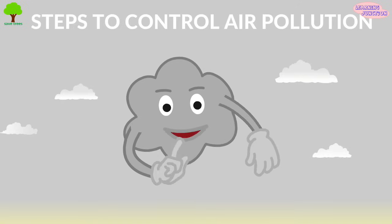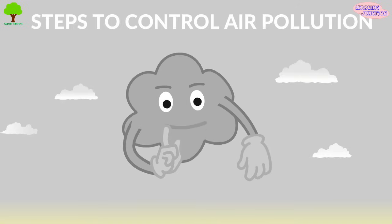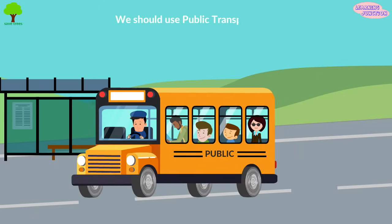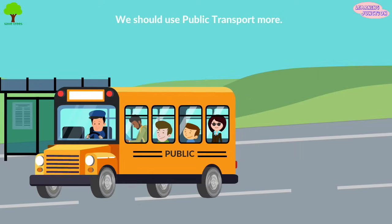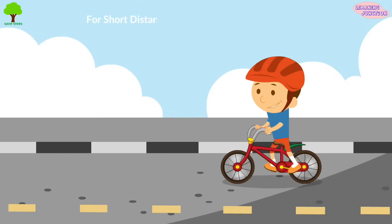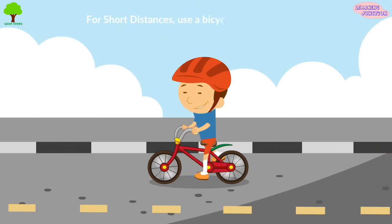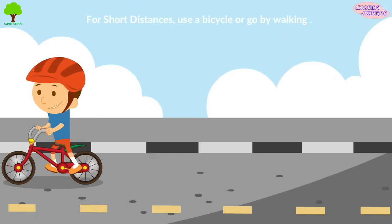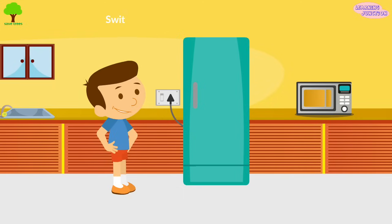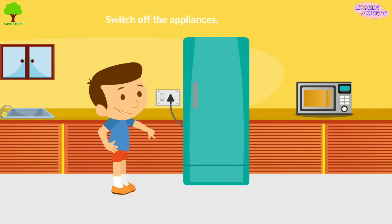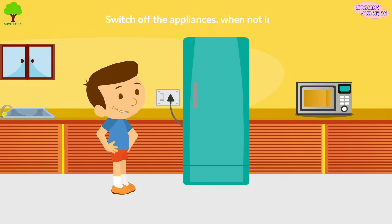Some of the steps to control air pollution are: we should use public transport more. For short distances, use a bicycle or go by walking. Switch off the lights, fans, air conditioners, televisions, and other appliances when not in use.